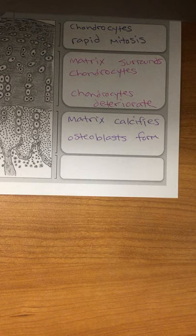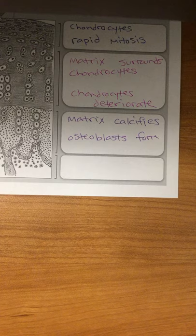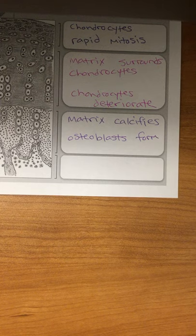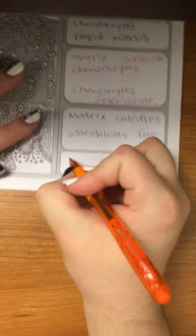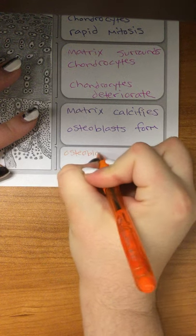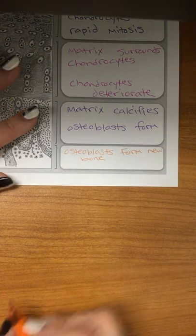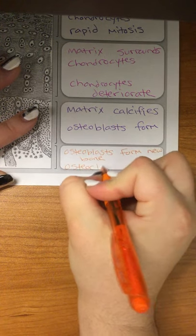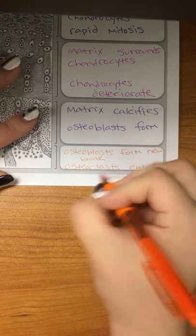And lastly, the osteoclasts. So as the bone gets bigger, the osteoclasts, the ones that were breaking down bone, start to take away the insides to make the medullary cavity. And the osteoblasts make new bone on the outside. So the bone is getting bigger by adding more on the outside but taking away on the inside. The osteoblasts form new bone and the osteoclasts enlarge the medullary cavity.